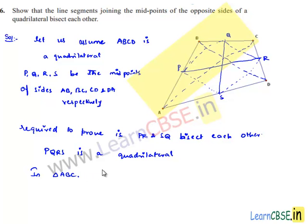In triangle ABC, we know that P is the midpoint of AB and Q is the midpoint of BC.